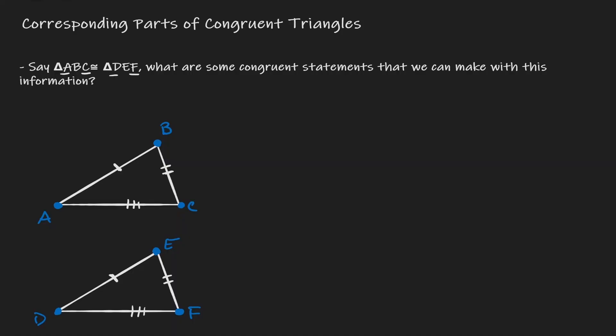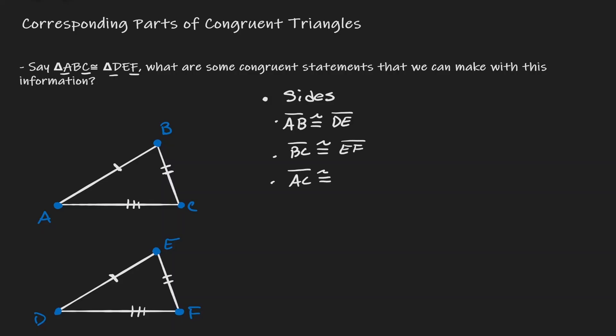Don't forget — the way that we state our congruency statement matters. The order matters. By the way we're stating that congruency, we can see that we have certain congruent sides. So in terms of sides, AB is congruent to DE, BC is congruent to EF, and AC is congruent to DF.